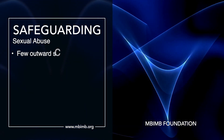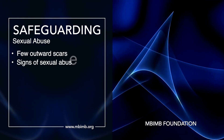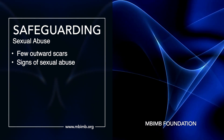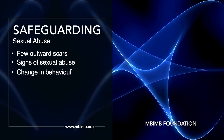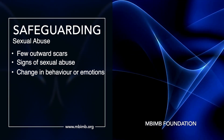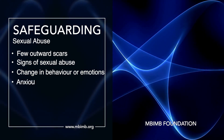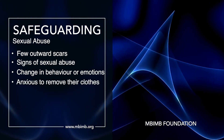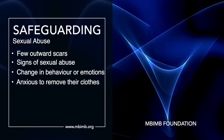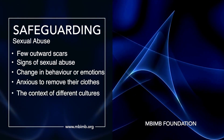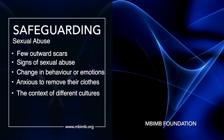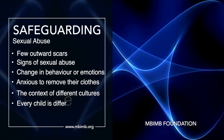There may be few outward scars or signs of sexual abuse. One of the most common signs to look out for is a change in behaviour or emotions. Children who have been or are being sexually abused may be anxious to remove their clothing, though it is important to think about this in the context of different cultures and remember that every child is different.